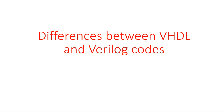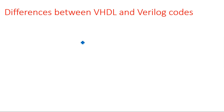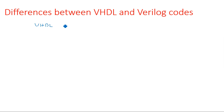Hi everyone, in this video I am going to explain the differences between VHDL and Verilog codes. We have discussed VHDL coding and its various syntaxes. In the next part we are going to start Verilog codes. VHDL stands for Very High Speed Integrated Circuit Hardware Description Language, and Verilog is simply Verilog Hardware Description Language. On the left hand side is VHDL and on the right is Verilog HDL.